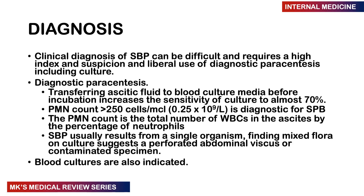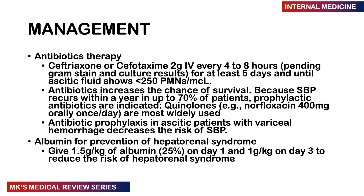To make a diagnosis you need a high index of suspicion and should perform a diagnostic paracentesis. When transferring ascitic fluid onto blood culture media, do this before incubation, as this greatly increases culture sensitivity by about 70%. The diagnostic criterion is more than 250 cells per microliter of ascitic fluid consisting of polymorphonuclear neutrophils. The PMN count is the total white blood cell count in the ascitic fluid multiplied by the percentage of neutrophils. Most of the time you'll find one single organism. If you culture a mixture of different organisms, it could indicate perforation from an abdominal viscus or contamination of the sample. Blood cultures should also be obtained.